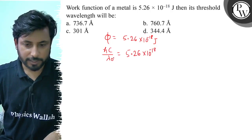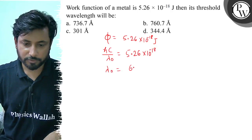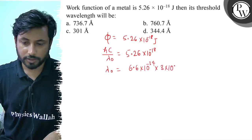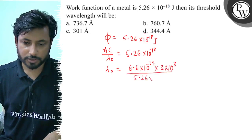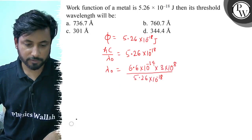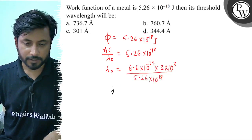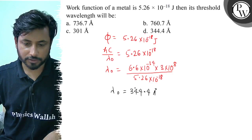Ab lambda 0 ki value nikaalte hain, to lambda 0 hoga: h ki value 6.6 into 10 to the power minus 34, c ki value 3 into 10 to the power 8, divided by 5.26 into 10 to the power minus 18. In sab ko solve kariye to lambda 0 ki value aayegi 344.4 Angstrom.